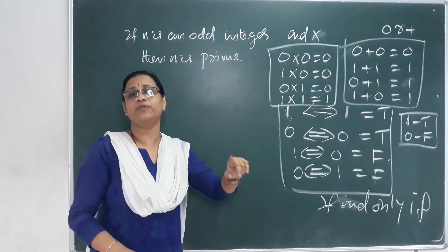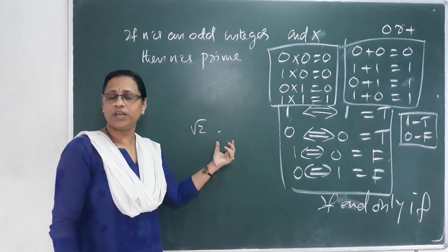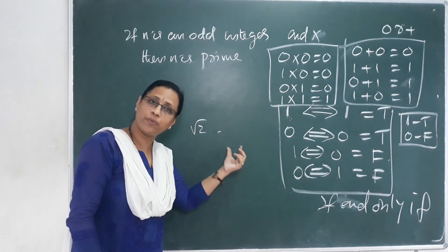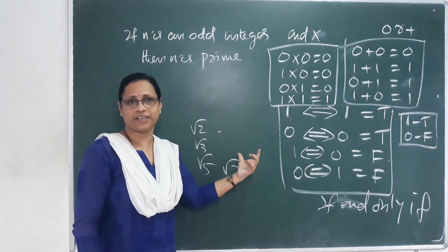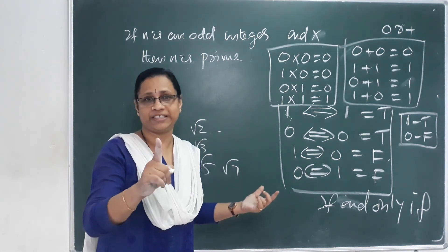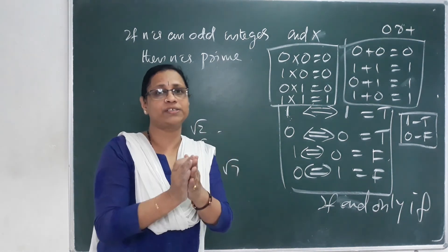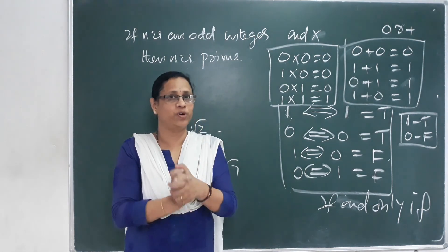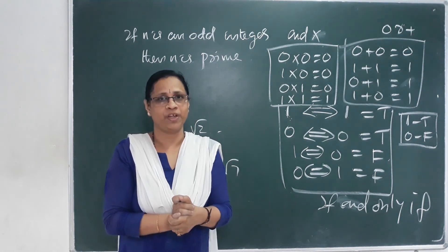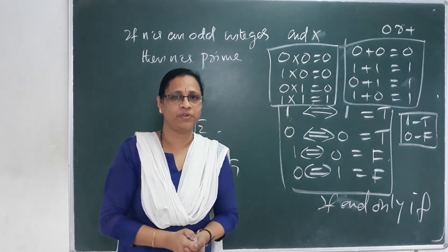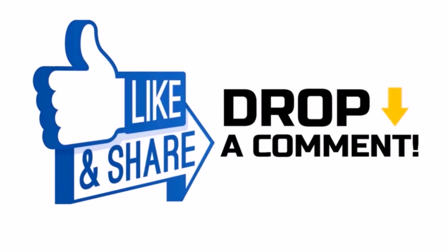We call it main — contra-positive and contradiction. The root 2 is an irrational number. This is a very important question. We call root 2 an irrational number, also root 3, root 5, root 7. That is why we call it negation. Contra-positive. Converse. This is important. We call it a counter-example. This is the lesson of mathematical reasoning. Thank you. I'll see you next time.